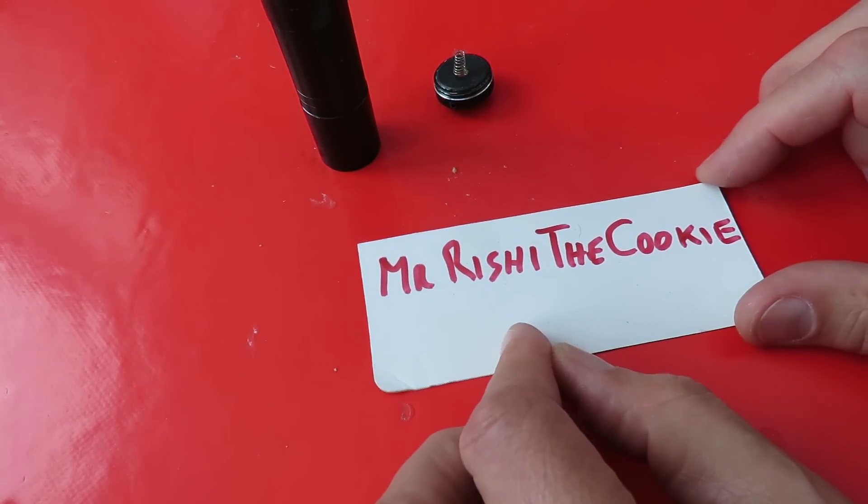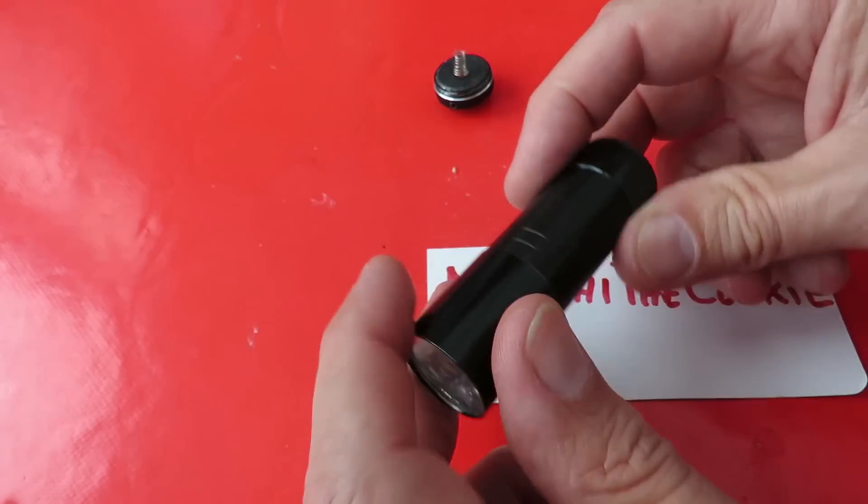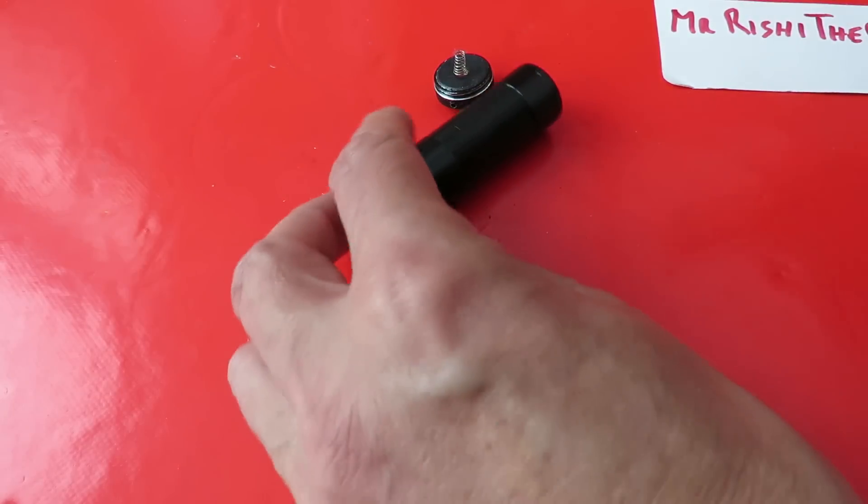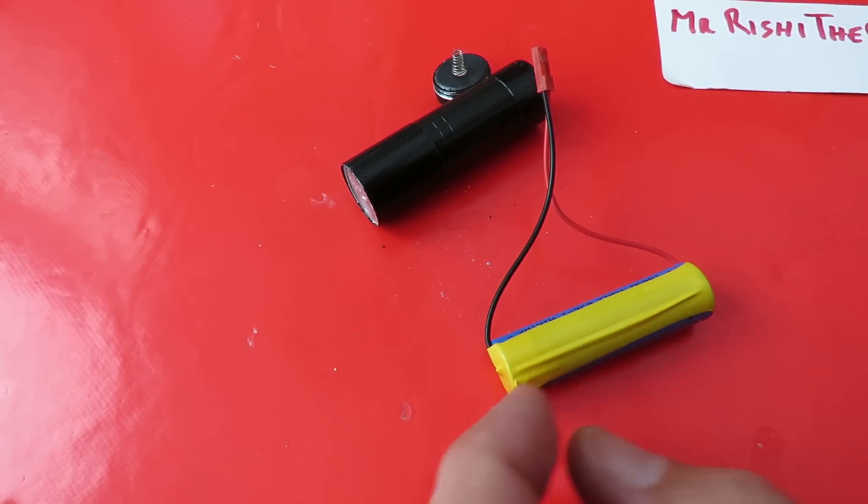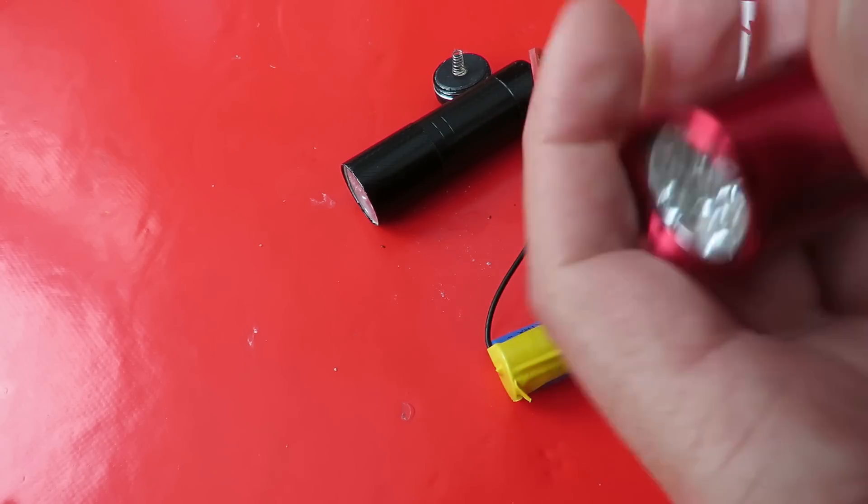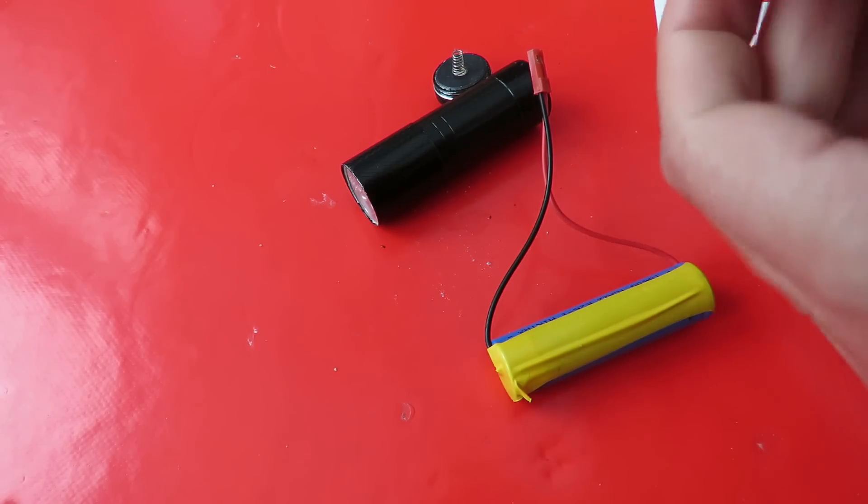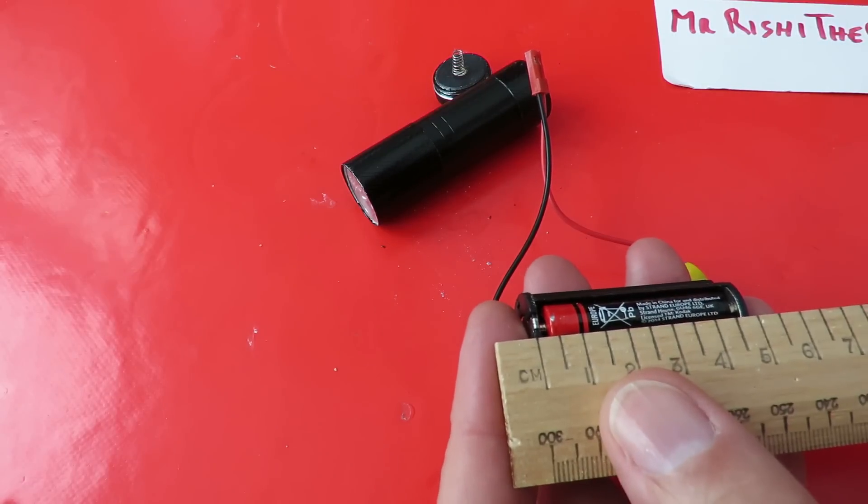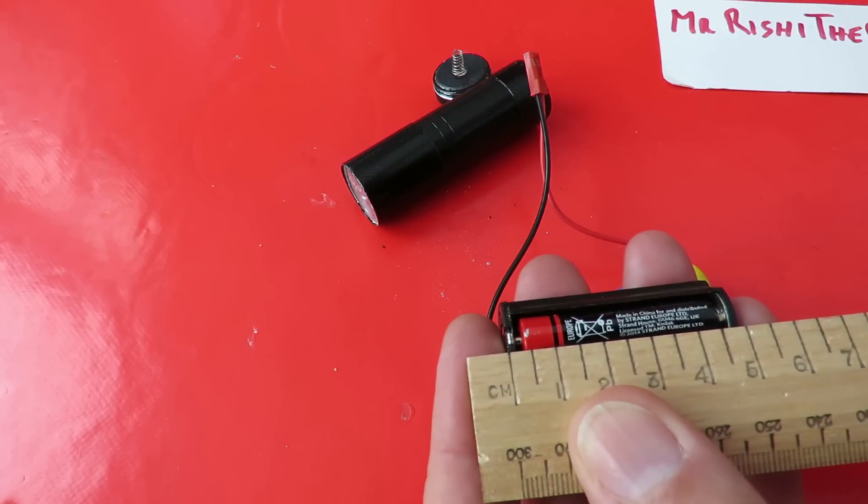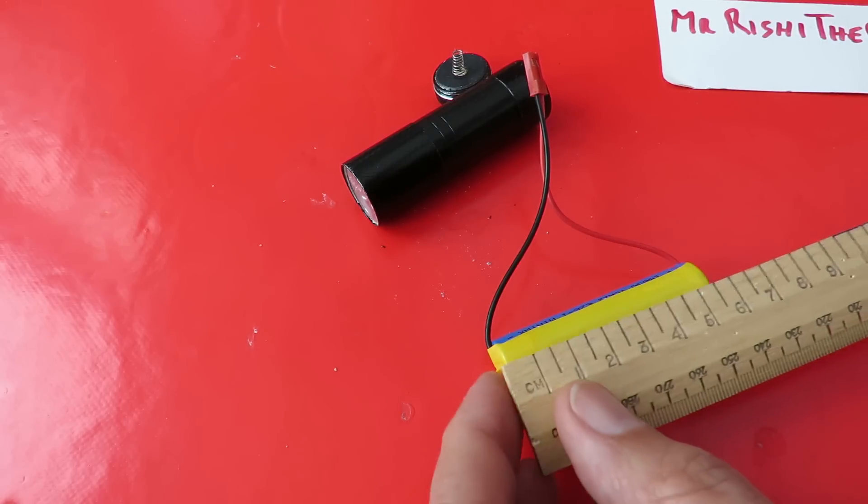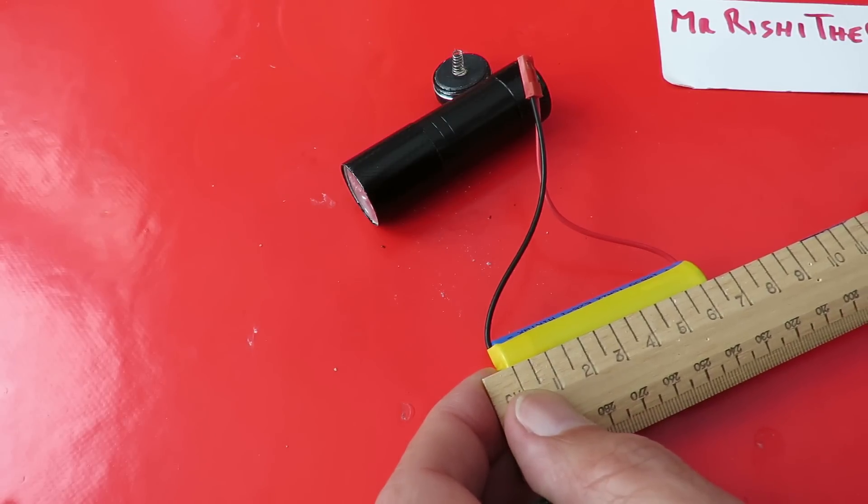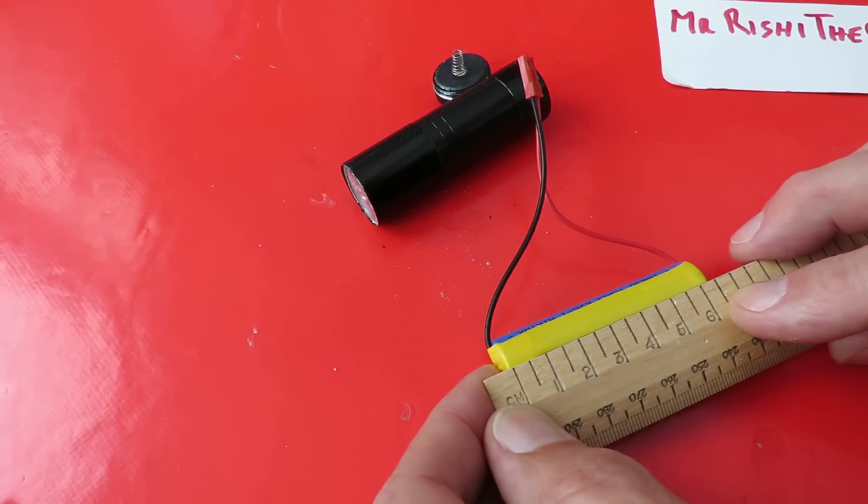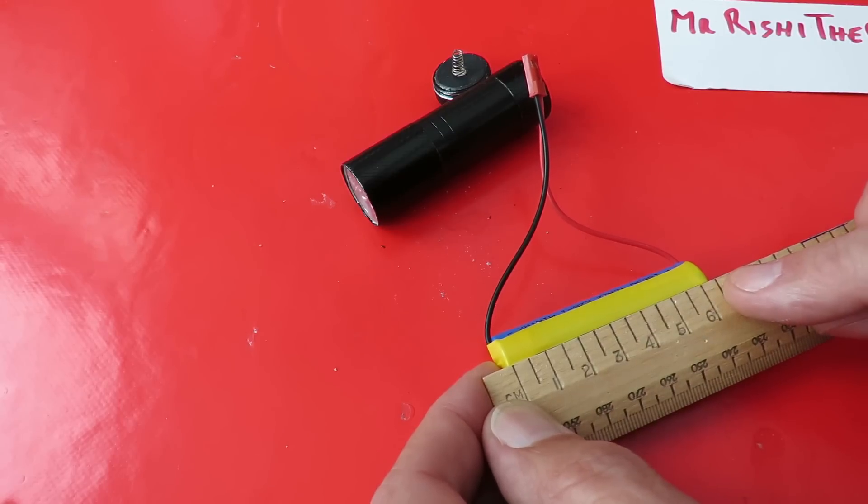Mr Rishi the cookie watched that video and said well can't you stick an 18650 in there? And the short answer is no because that battery container is 50 millimeters long. An 18650 is 65 millimeters long because that's what the 650 stands for.